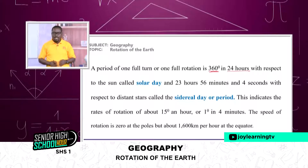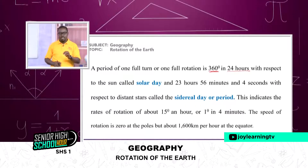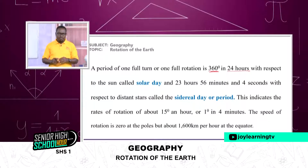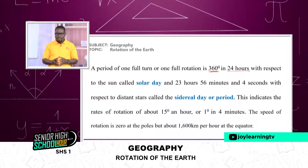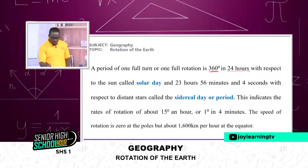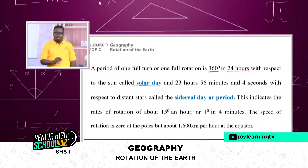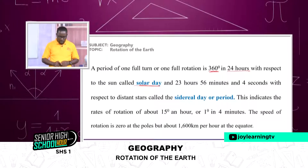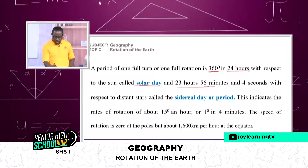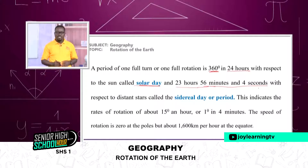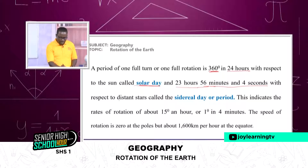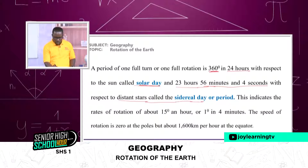360 degrees in 24 hours. We can calculate what one hour will be in degrees, or what 15 degrees will be in hours. In every 24 hours, with respect to the sun, this is called the solar day. We also have 23 hours, 56 minutes and 4 seconds—that is with respect to distant stars, called the sidereal day or sidereal period.